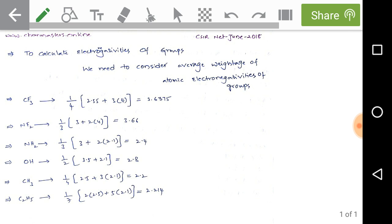Calculate for CH3. We have four atoms, so 1/4 into [carbon has 2.5 electronegativity and hydrogen has 2.1, 3 hydrogens] = 1/4(2.5 + 3×2.1) = 2.2.